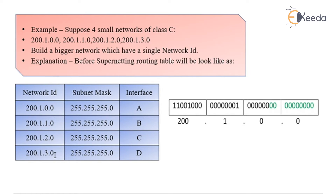All these belong to four particular networks and I want to supernet them. I have to apply the subnet mask and check whether they are contiguous and divisible by 2 raised to n. This particular problem satisfies all the conditions required. So the four networks can be combined to finally give 200.1.0.0 as the supernetting address.